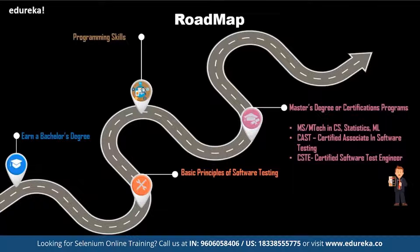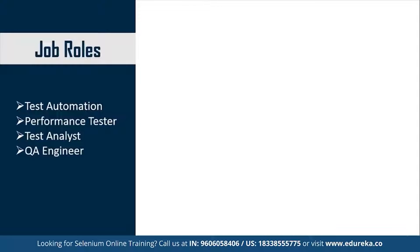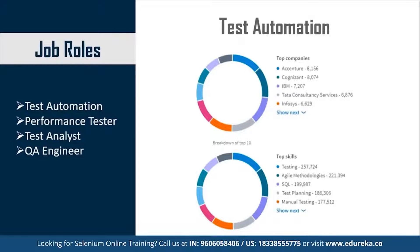Now let's move ahead and look at the job roles for a Test Automation Engineer. Some of the most common job profiles include Test Automation, Performance Tester, Test Analyst, and QA Engineer. Looking at statistics provided by LinkedIn on these top profiles, the top companies in Test Automation include big names like Accenture, Cognizant, IBM, TCS, and Infosys.